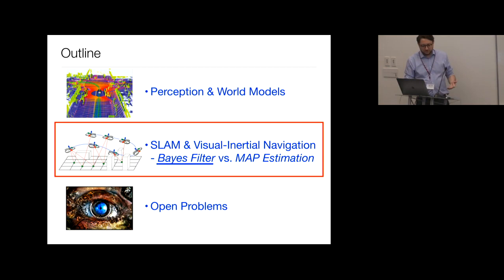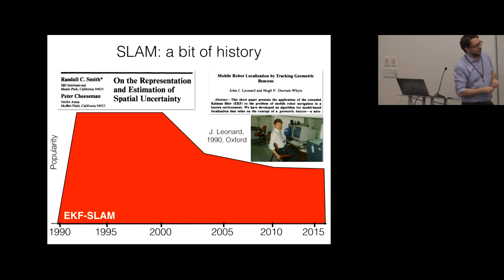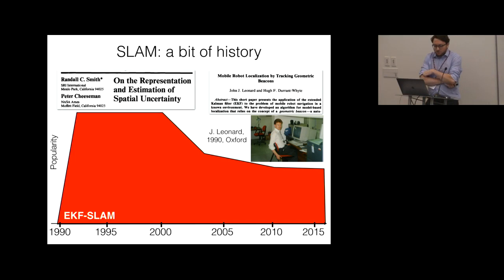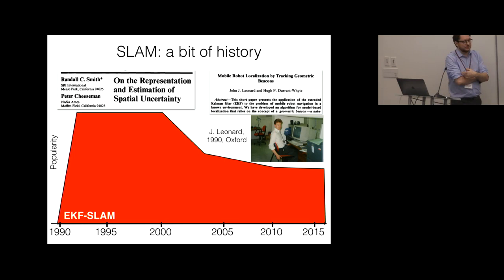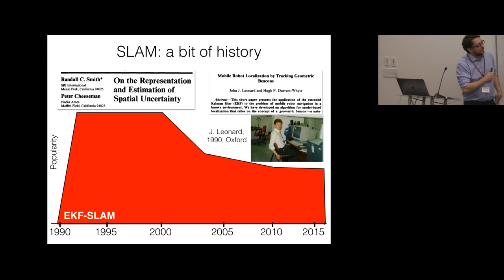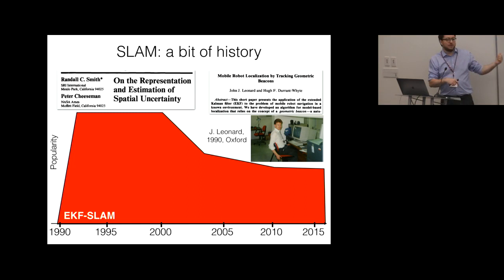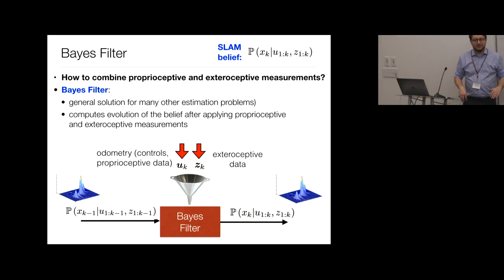I'll discuss two formulations, starting with EKF-SLAM. The basic tool is the Bayes filter — not just a SLAM tool but a very general estimation tool. For SLAM, it provides a grounded formulation to combine proprioceptive and exteroceptive measurements, and is a general solution to many estimation problems. The Bayes filter computes the full belief — the large probability distribution — over time.